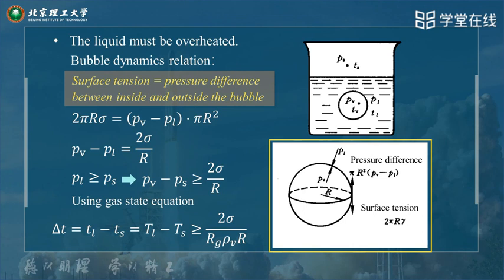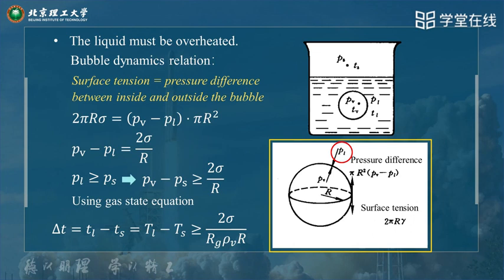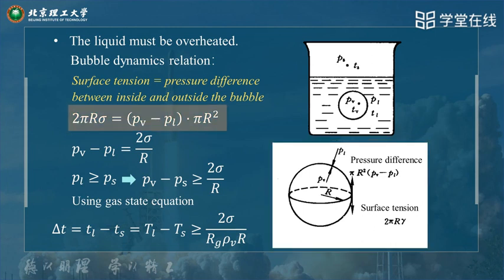We get the surface tension balance: the surface tension equals the pressure difference between inside and outside of the bubble. Inside the bubble, the gas pressure is P_V and the liquid pressure is P_L. So the force balance gives: 2π·R·σ = (P_V − P_L)·π·R², which simplifies to P_V − P_L = 2σ/R.